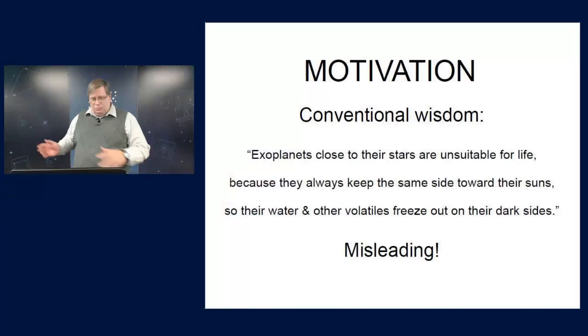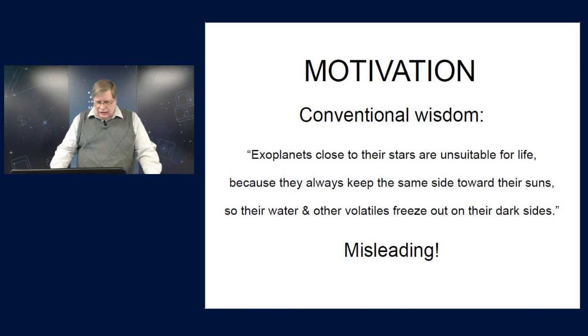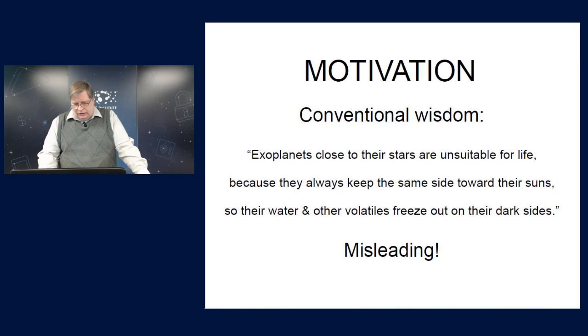And that's given here. It's often said exoplanets around their stars are unsuitable for life because they always keep the same side towards their suns. So their water and other volatiles freeze out on the dark sides.